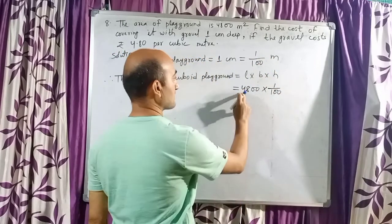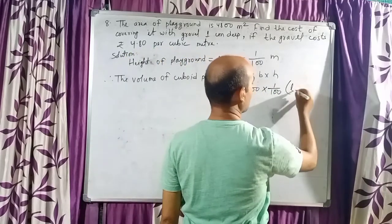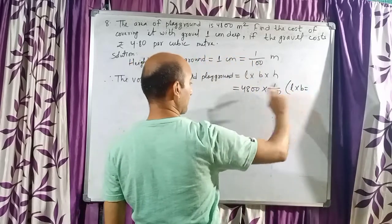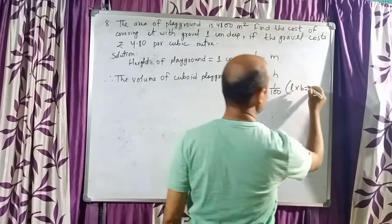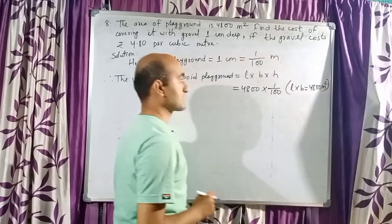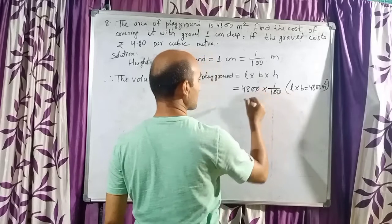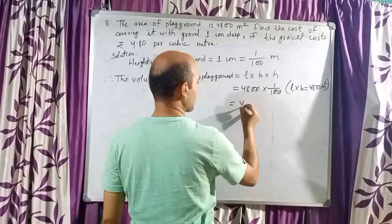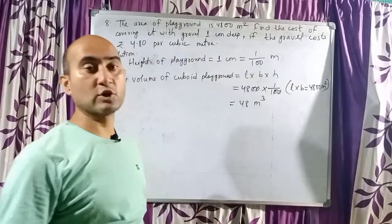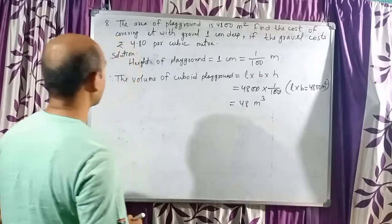This is meter square and height is meter, so it will become meter cube. Length into breadth is the area of playground and its value is 4800 meter square, so I will mention it in the bracket. Cancel the zeros — our final answer is 48 meter cube. So the volume of the cuboid playground is 48 meter cube.